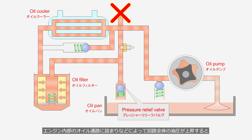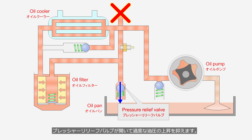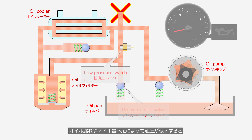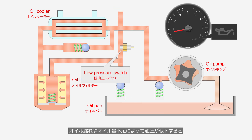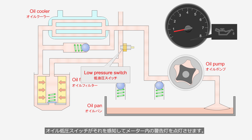When blockages occur in the oil passages within the engine, leading to an increase in circuit oil pressure, the pressure relief valve opens to prevent excessive pressure buildup. When oil pressure drops due to a leak or a low oil level, the oil pressure switch detects it and turns on the warning light on the instrument panel.